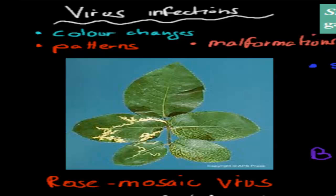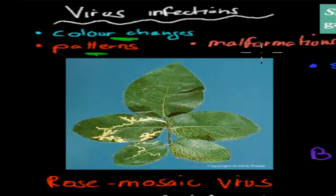You should know there are different types of infections: virus infections, bacterial infections, fungal infections, and insect pests. These infections have different types of patterns. A virus infection you can usually tell because there's going to be a change in color — that's quite common. Or they're going to have strange patterns happening. Or there will be malformations, which means that the leaf itself will not look as it should — it might be twisted or bent, but it will not be straight.